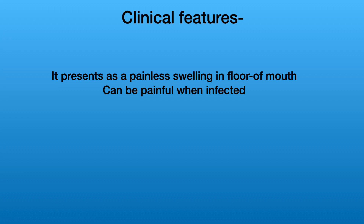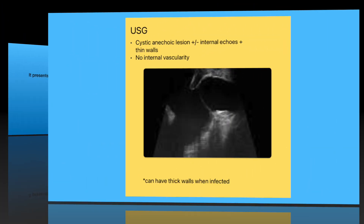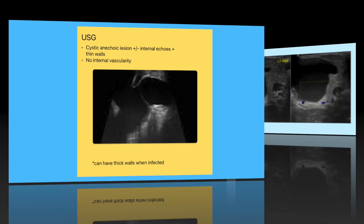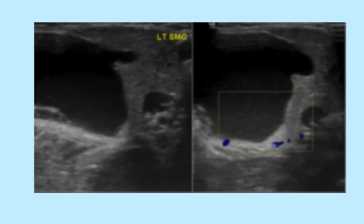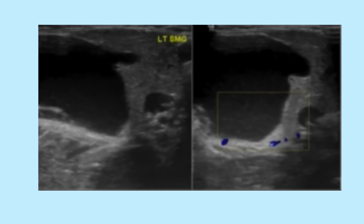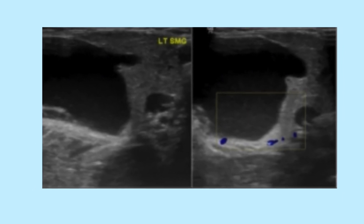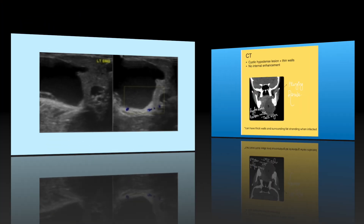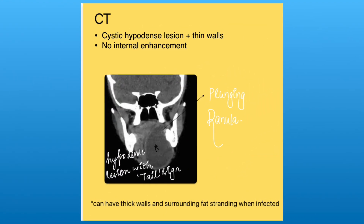On ultrasound (USG), ranulas appear as cystic anechoic lesions with or without internal echoes and thin walls. They can have thick walls if they are infected. On CT scan, they appear as cystic hypodense thin-walled lesions.